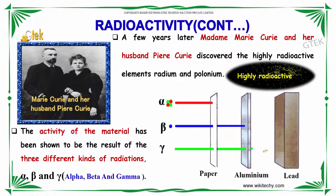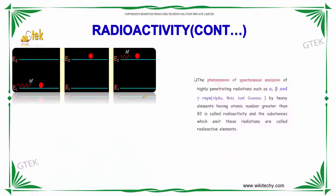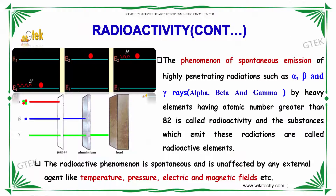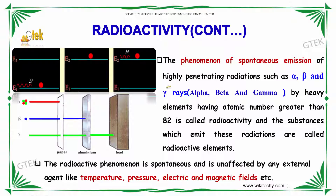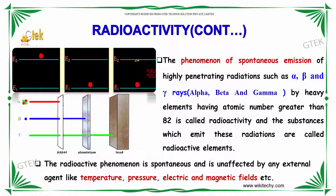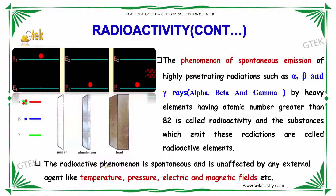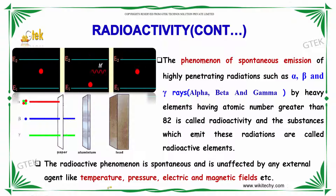The phenomenon of spontaneous emission from one state to another, where it emits something — that is called spontaneous emission — such as alpha, beta, and gamma rays by heavy elements having atomic number greater than 82 is referred to as radioactivity. The substances which emit this radiation are called radioactive elements. The radioactive phenomenon is spontaneous and is unaffected by any external agent like temperature, pressure, electrical, and magnetic fields.